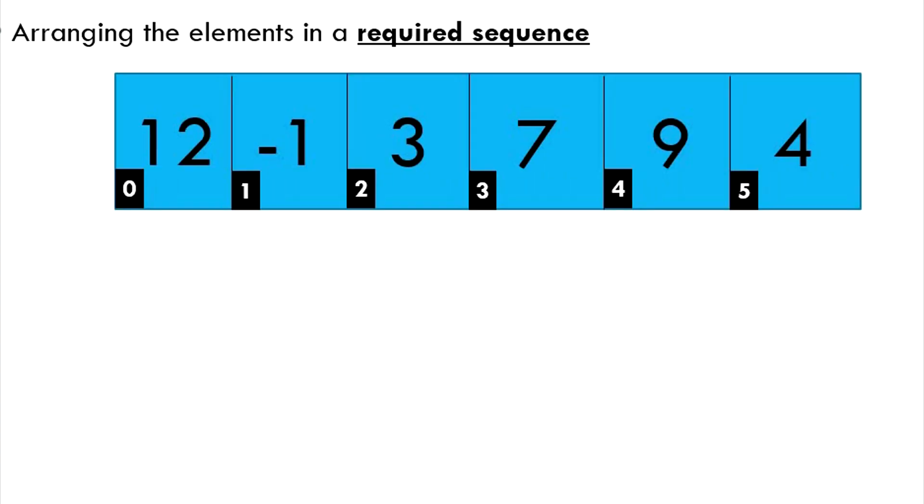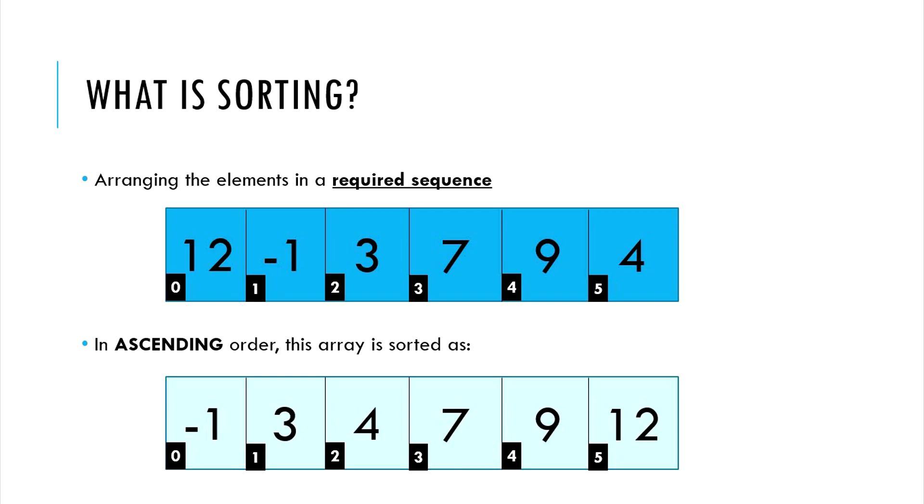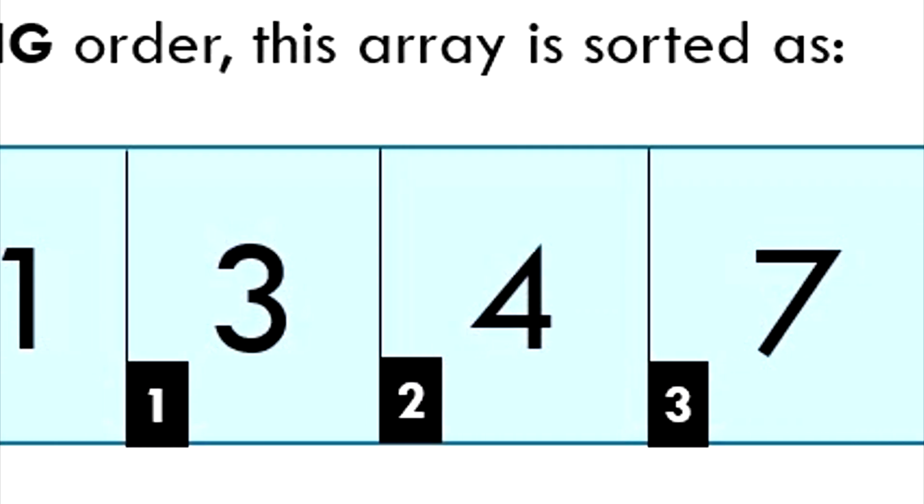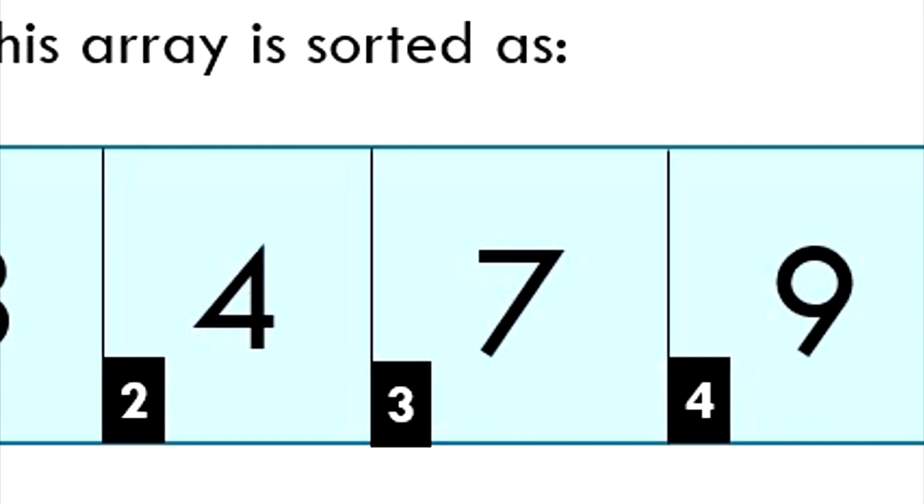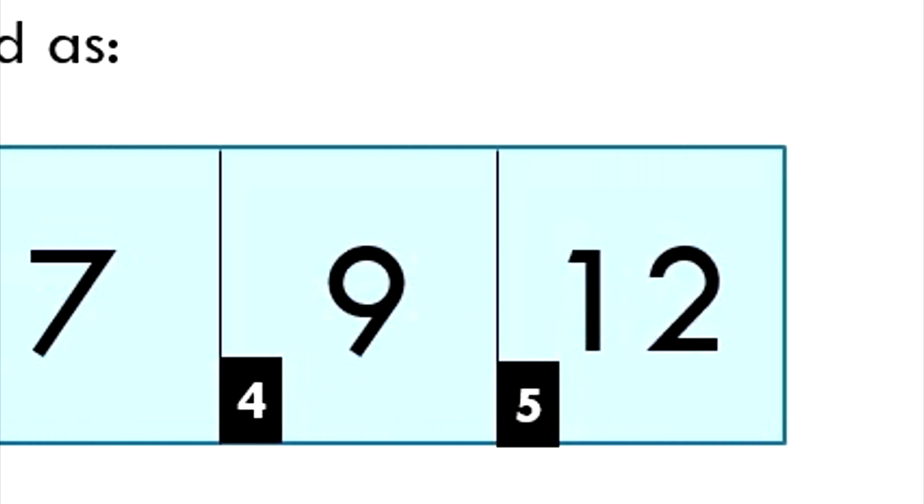If this array was to be sorted in an ascending order, the result would be this. Notice how the smallest number, that is minus 1, is at the beginning of the array, or index 0 of this array. And the largest number, 12, is at the end of the array, that is index 5 of this array.